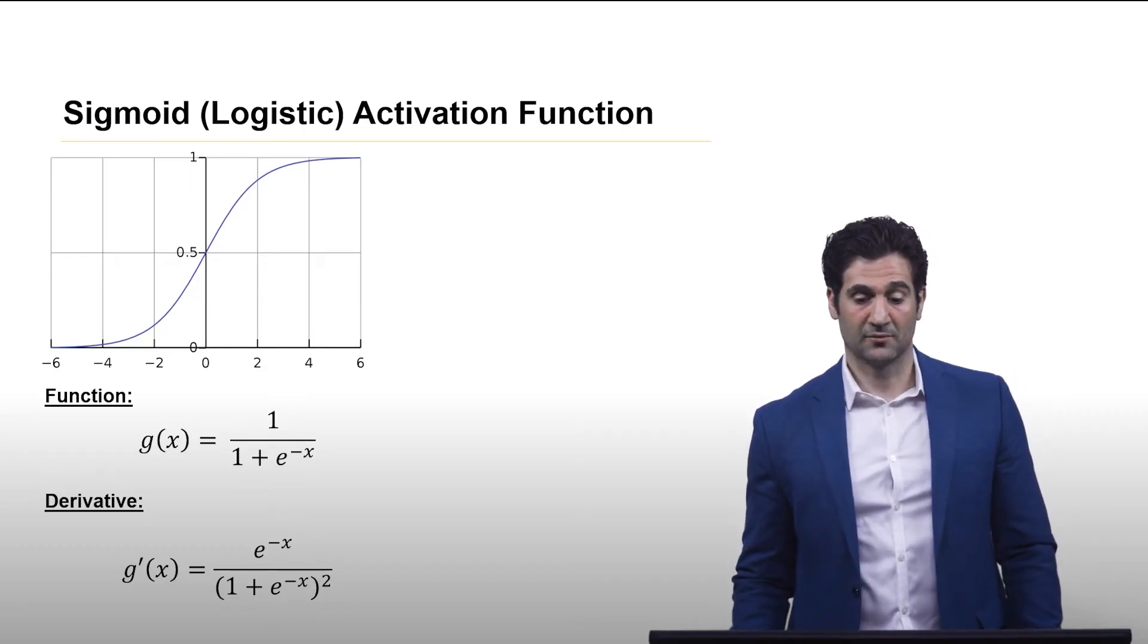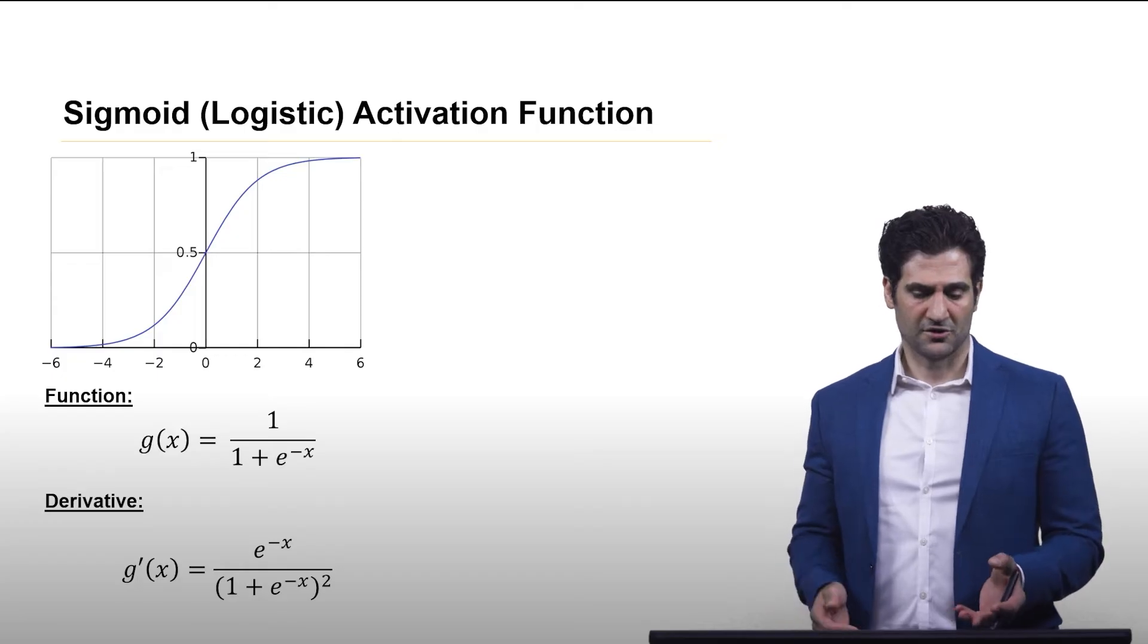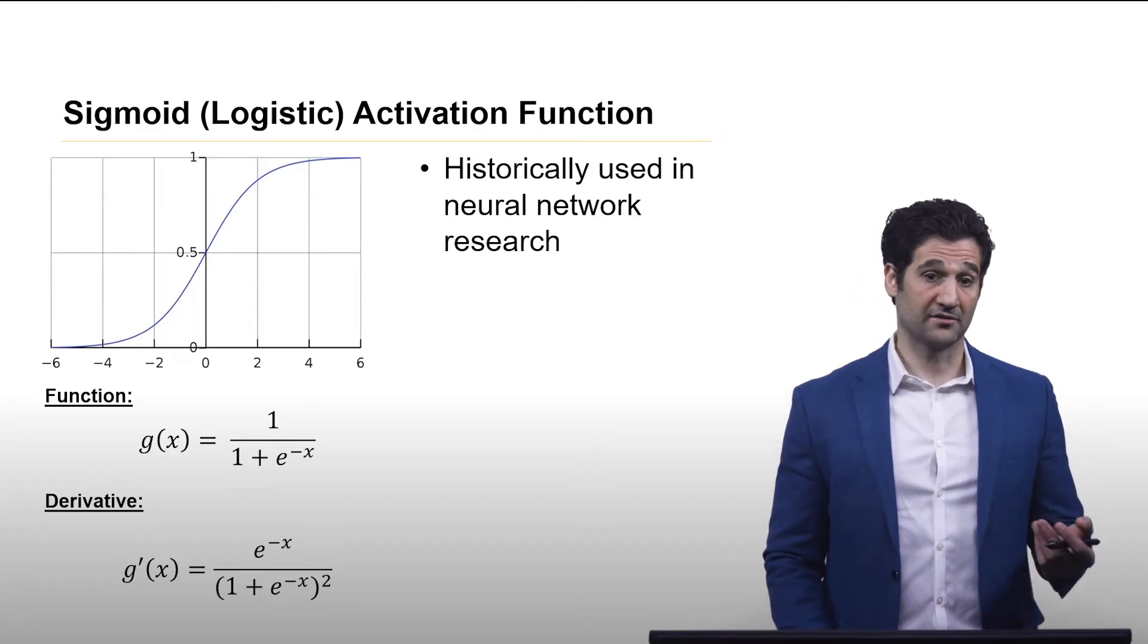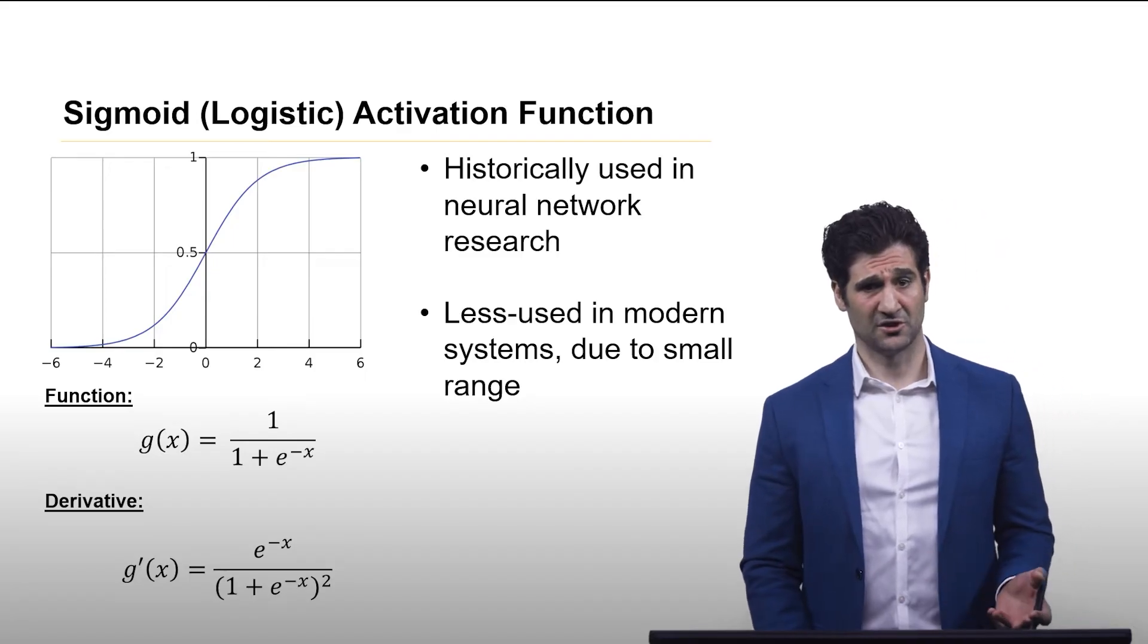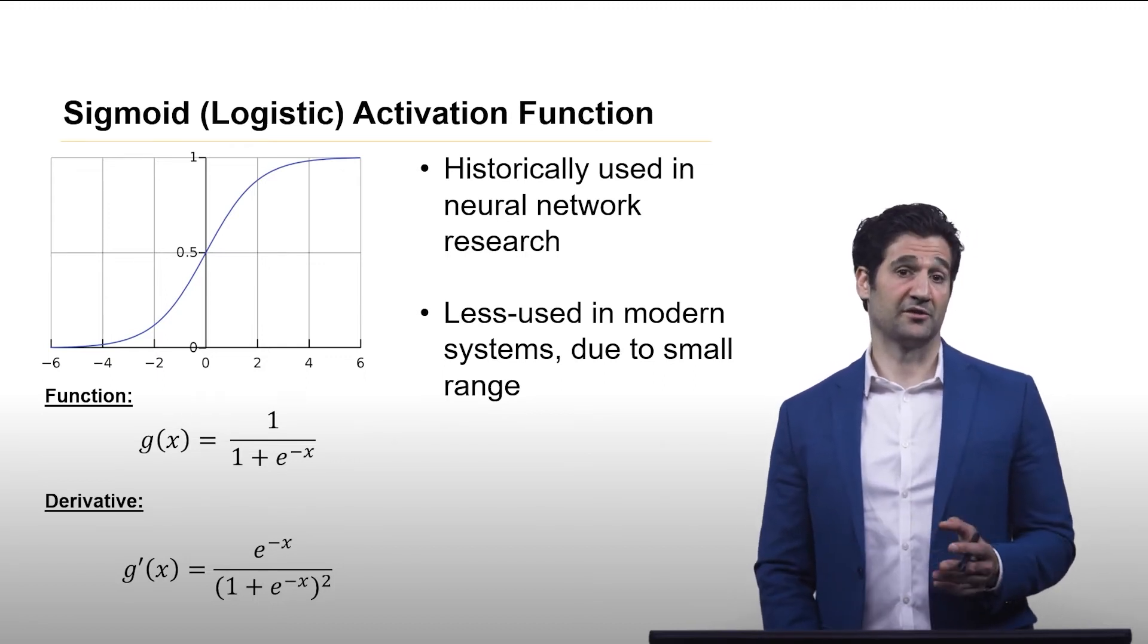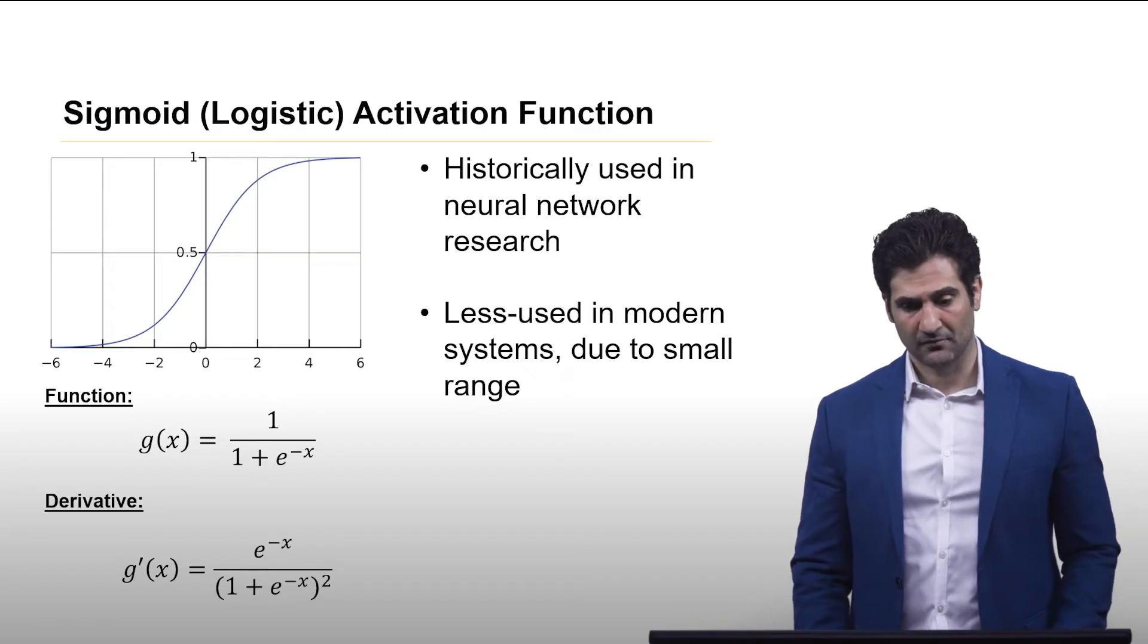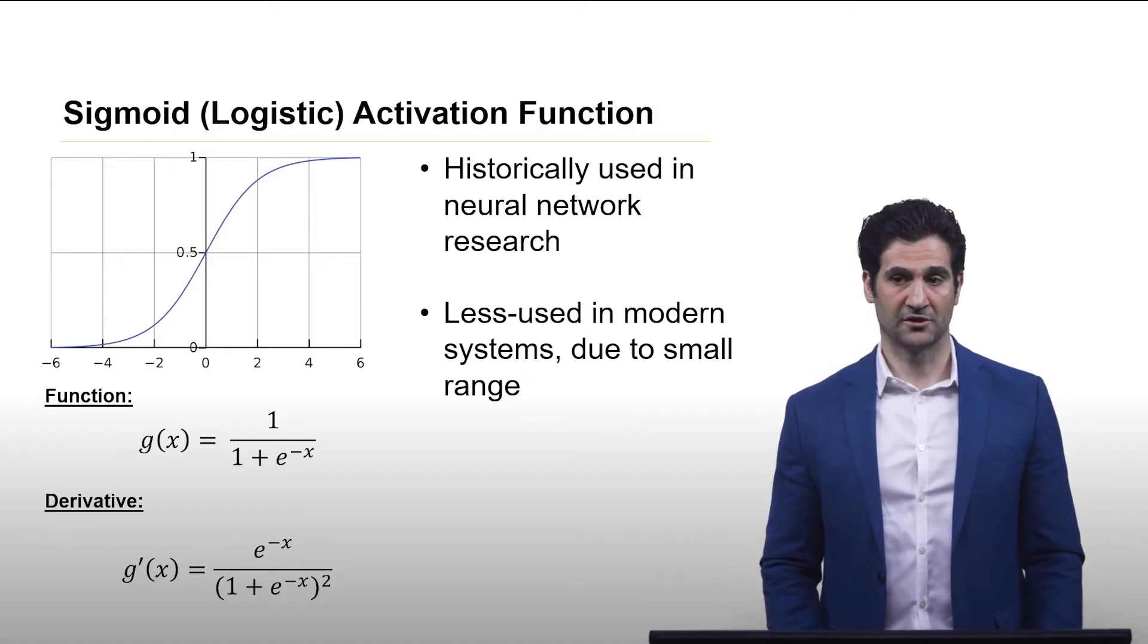The next one is the sigmoid activation function. And here we get this is just the logistic function of the argument. And this was one of the earliest introduced activation functions in neural network research. And so a lot of the older papers, especially prior to 2012, used sigmoid a great deal. But today it's less used in modern systems, mainly due to the fact that in practical terms, RELU and variants of RELU that we'll touch on a little later perform a lot better when you have very deep neural network structures. When the sigmoid function was used more widely, it was really prior to the advent of very deep neural networks that were only enabled since 2012 due to the use of GPU processing.